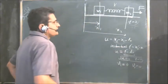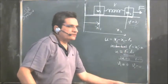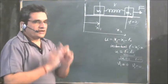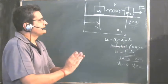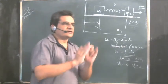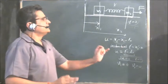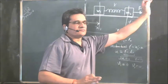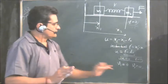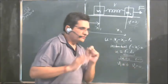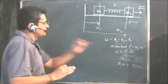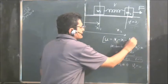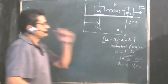You have to take velocity not equal to 0 at t equals 0 only in such conditions where the problem states that at t equals 0 some velocity is given. Until unless that is given, you have to take velocity 0 at t equals 0. So these are just the initial conditions, and these problems can be best solved by using this method.